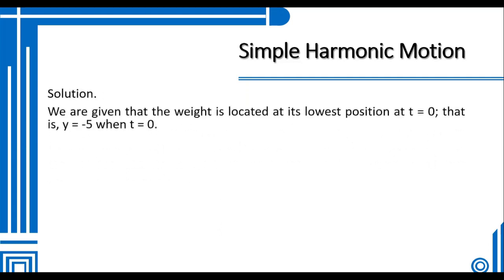Solution. We are given that the weight is located at its lowest position at t = 0, so y = -5 when t = 0. Therefore, the equation is y = -5 cos(bt).